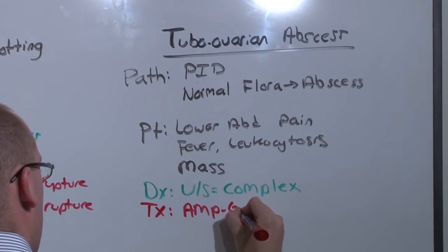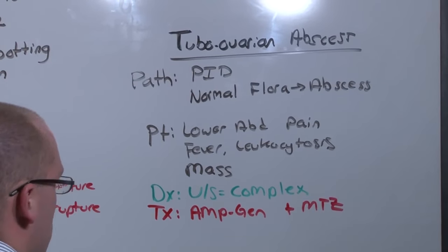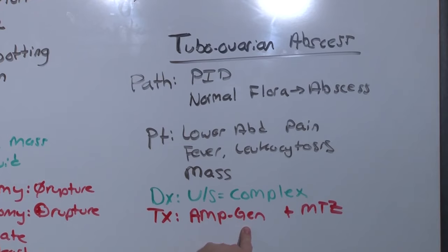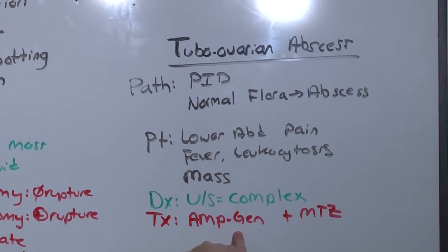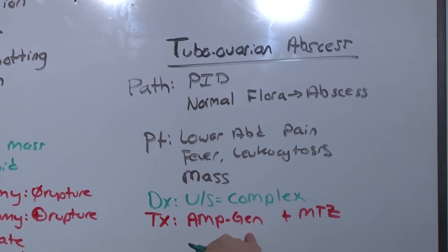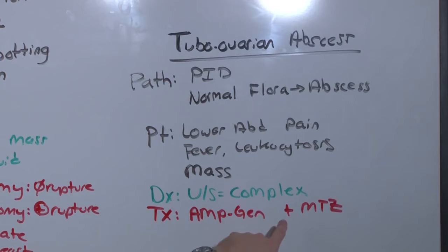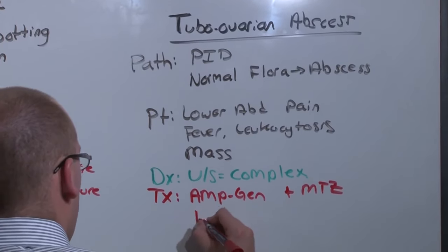You can use AMP and GEN plus metronidazole. And whenever you see AMP and GEN during this lecture series, know that you can substitute a fluoroquinolone for AMP and GEN, GEN not being used that often because of its nephrotoxic side effects. And of course, if they do not improve on antibiotics, you may need to go in and drain it.